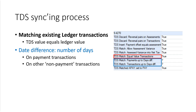Sometimes a transaction matches the amount of a ledger transaction recorded by the accounting practice, but has a date that differs by a few days. Two additional TDS match settings allow you to set the number of days difference between a TDS and an otherwise equivalent ledger transaction to allow it to still be matched. One of the day difference settings is specifically for payment transactions, while the other handles all other transaction types.